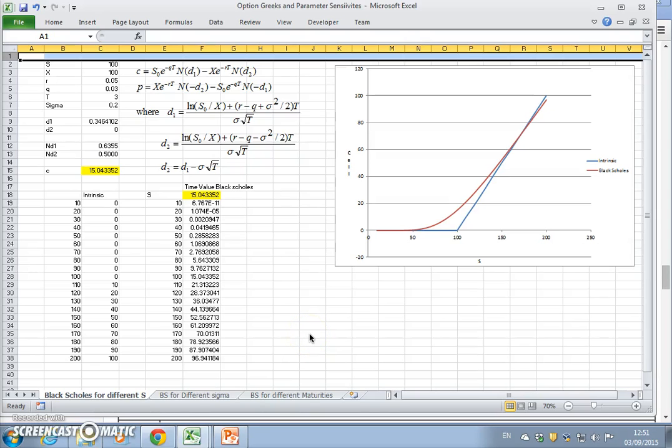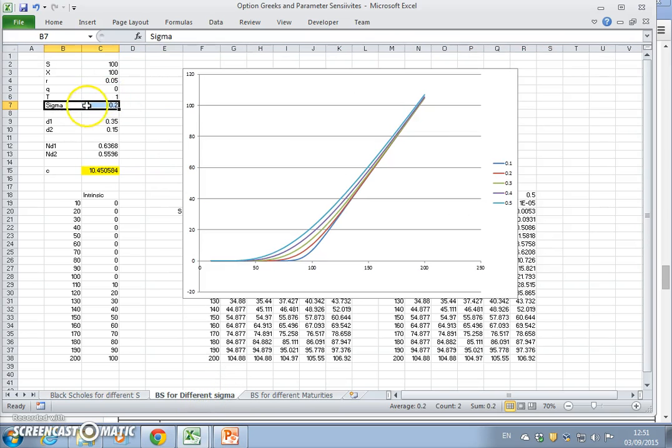In the previous two videos we looked at the effect of changing the value of the underlying asset on the value of the option. We could see as the value of the underlying increases, the value of the option increases for a call option. Also for a call option, if you increase the volatility, the value of the option tends to increase as well.